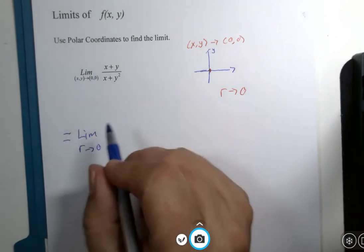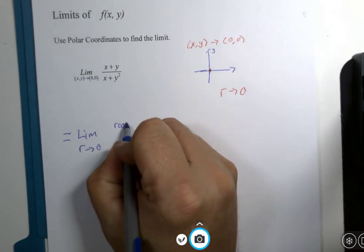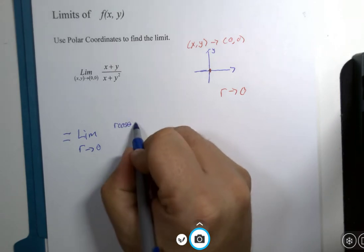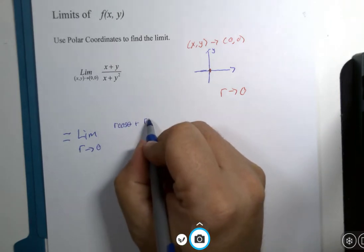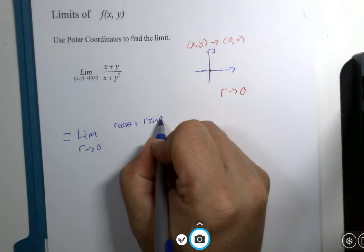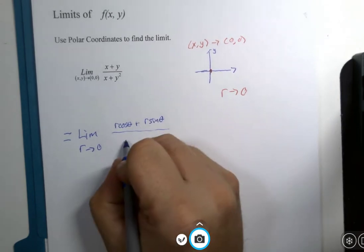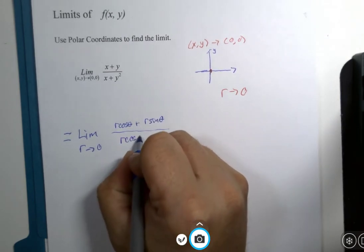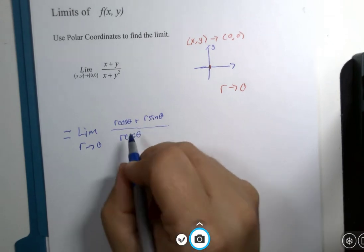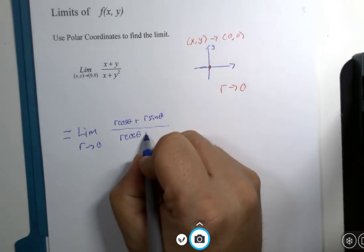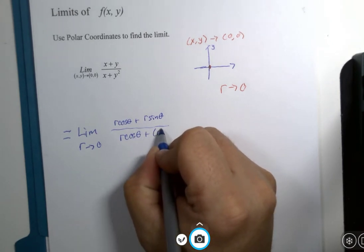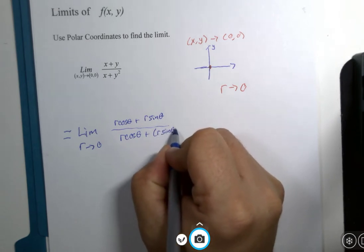x values become r multiplied by cosine of theta and y is r multiplied by sine of theta. And let me go through and finish writing the rest of this function. That would be r cosine of theta plus r. I'll go ahead and use the parentheses since they're here.